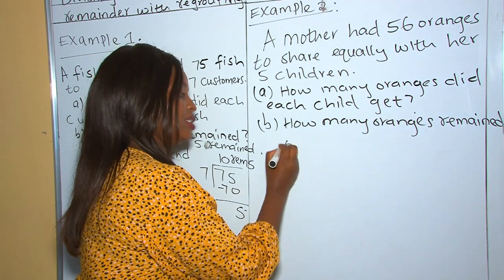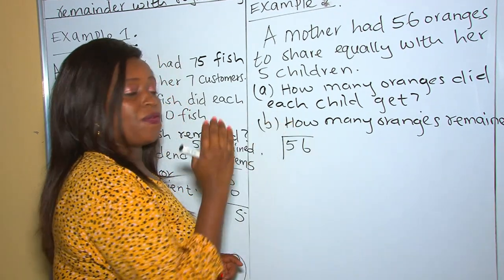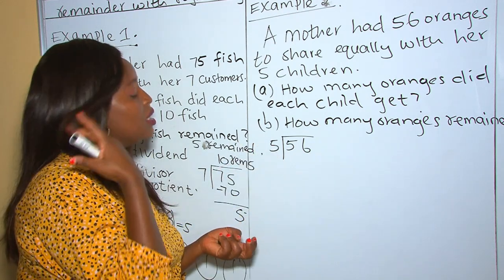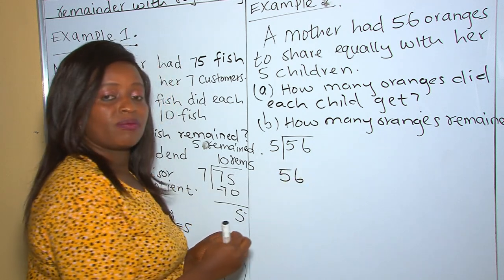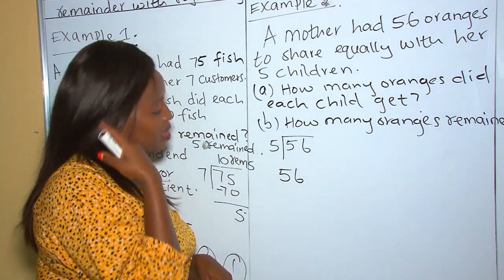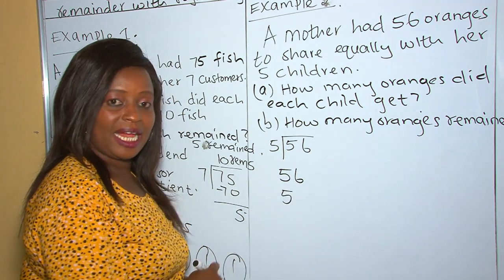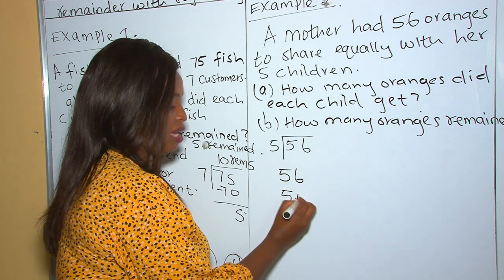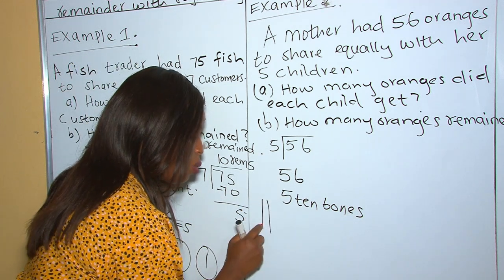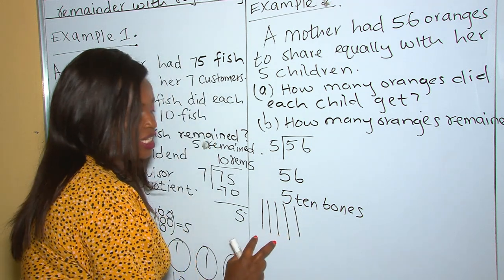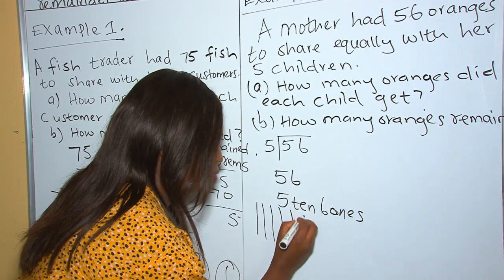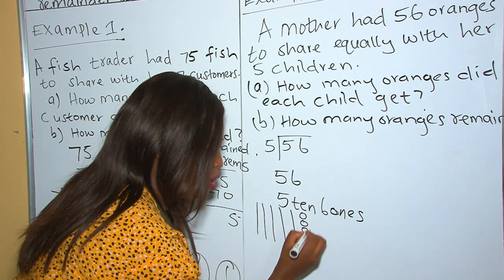In our question, 56 is our dividend and 5 is our divisor. So 56 divided by 5. We use the practical method whereby we regroup 56. In 56, we have tens and ones. There are 5 tens and 6 ones. We use bars to show the tens: one, two, three, four, five. These are 5 tens. And our 6 ones: one, two, three, four, five, six.